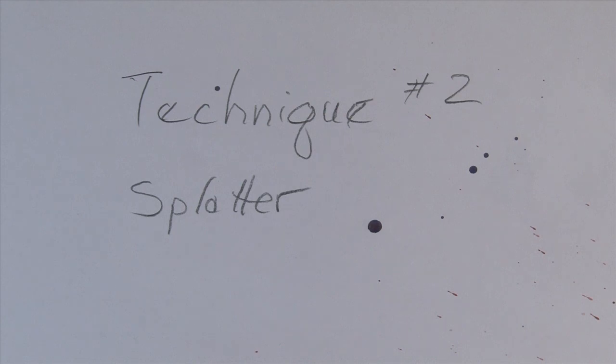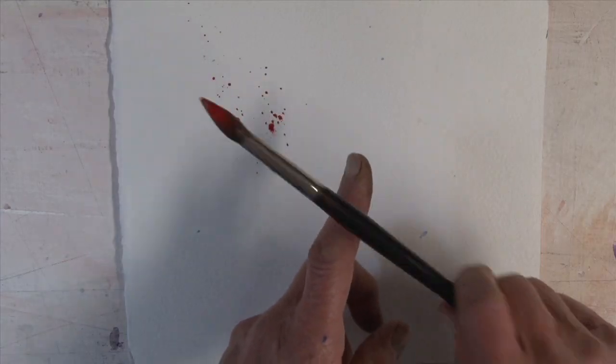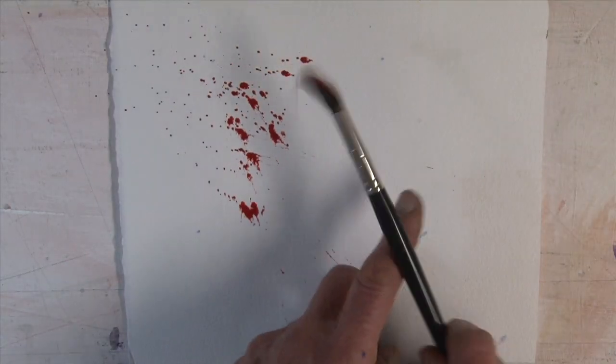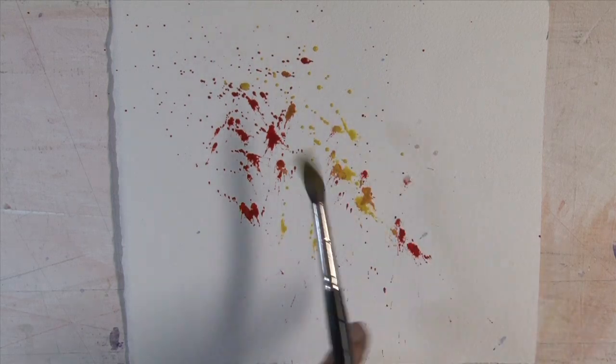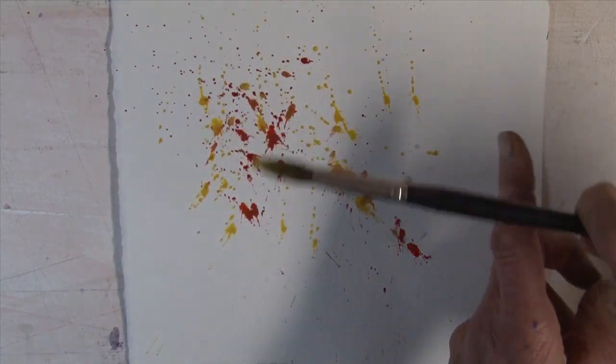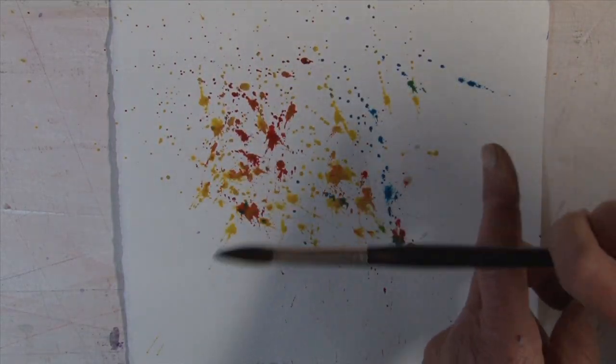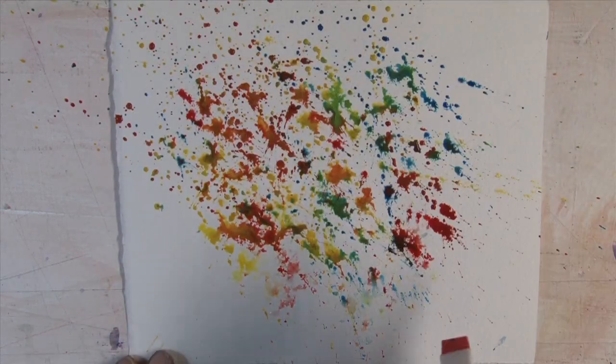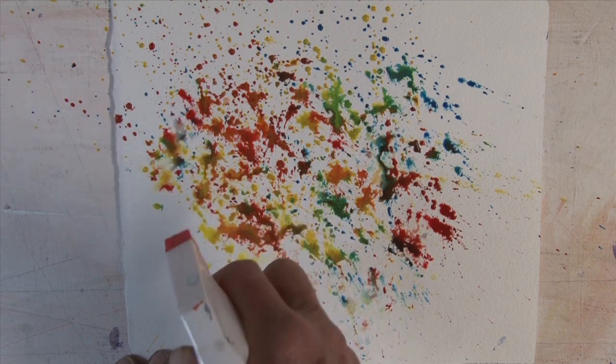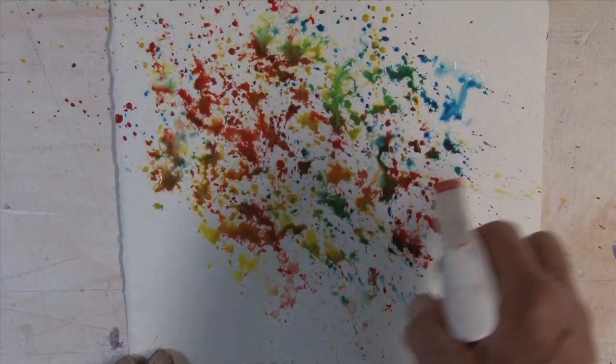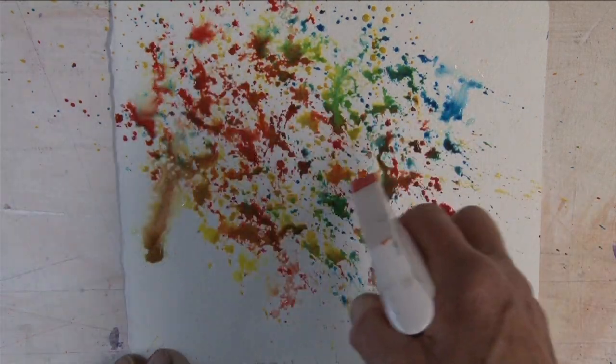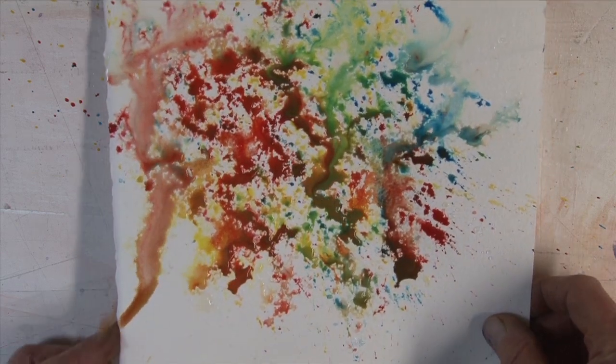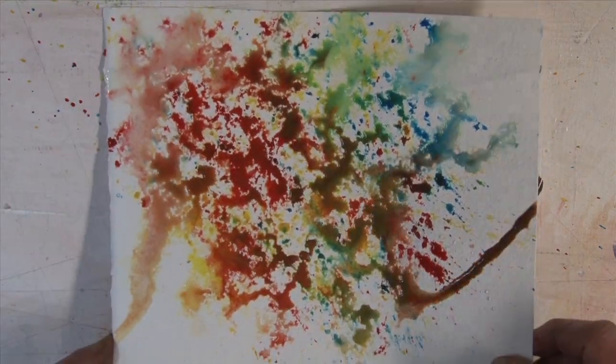The second technique is a variation on the first one and it's splattering the paint. Now let's look at some paintings that use splattering.